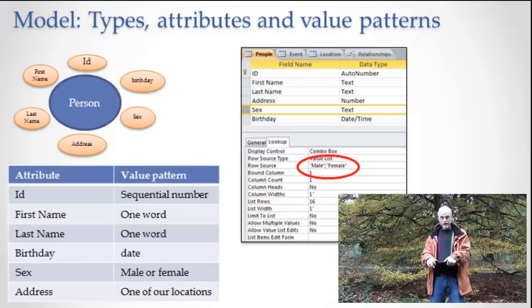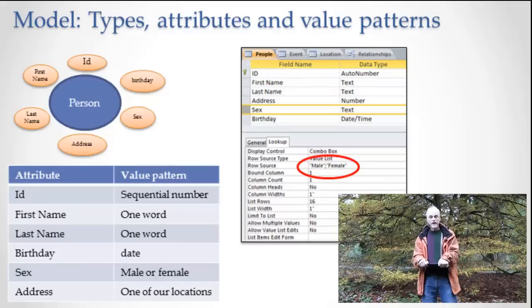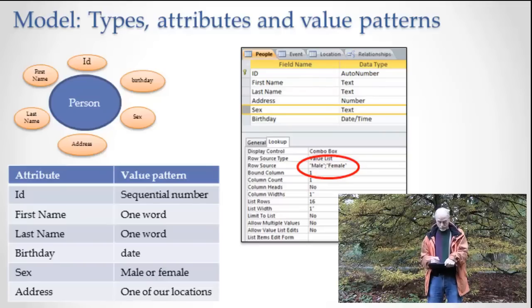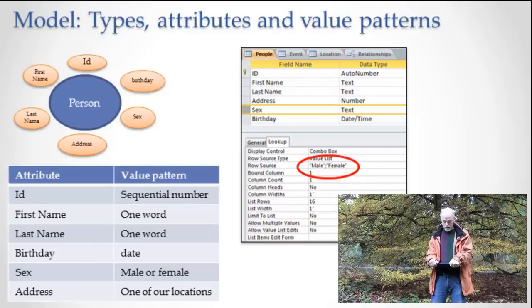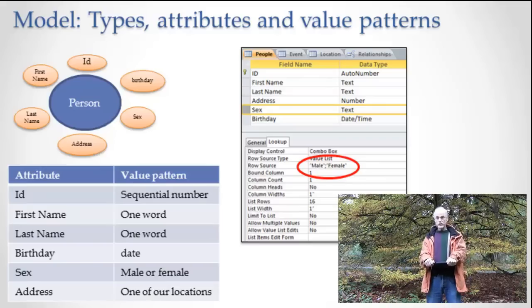And then we have data type. Data type is another way of saying value pattern. And if you look below, there's lots of information here. I've circled the male-female part. So, notice somewhere down there in the below area, we're able to say that sex is either male or female. You don't get to have a third choice there. You have to choose either male or female. That's the way we set up the model.